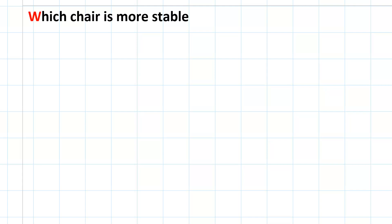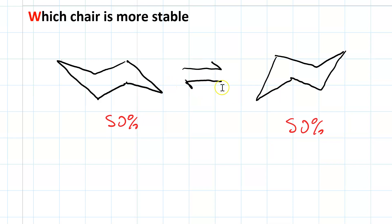Now let's answer the question, which chair is more stable? If your cyclohexane is unsubstituted, the chairs are equally stable. Your unsubstituted cyclohexane will be rapidly switching back and forth between the two chairs in solution, and it will spend roughly 50% of its time in either chair.